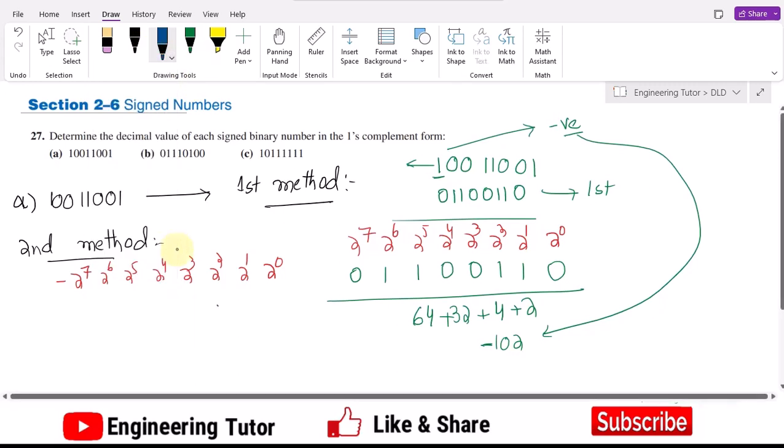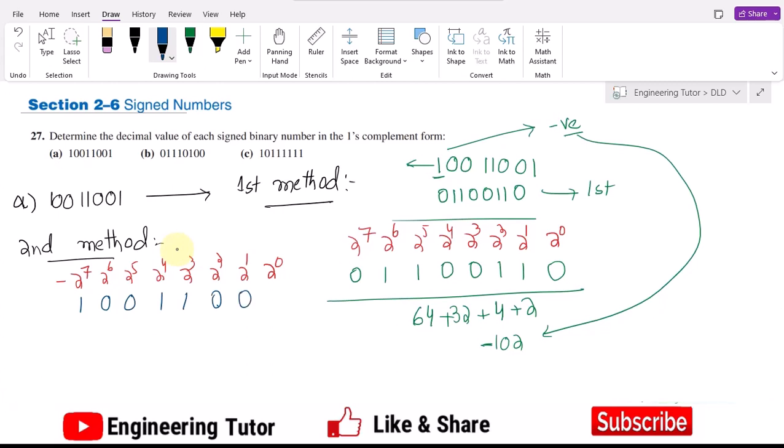Now writing the bits here, I will get 1, 0, 0, double 1, double 0, and 1.